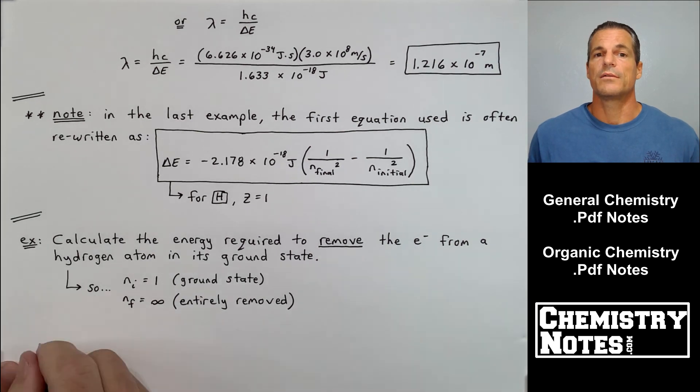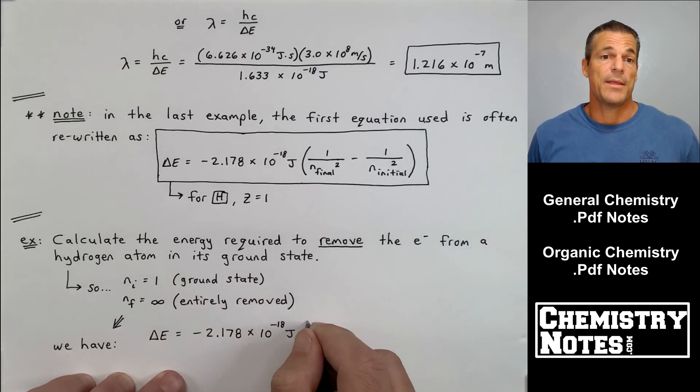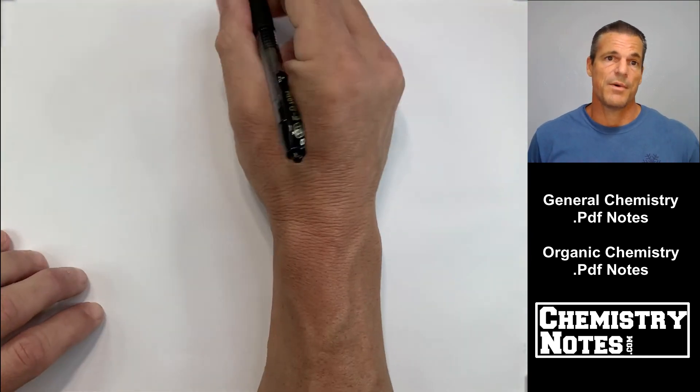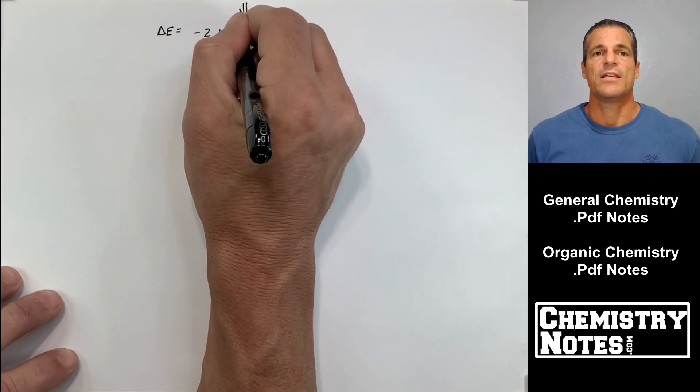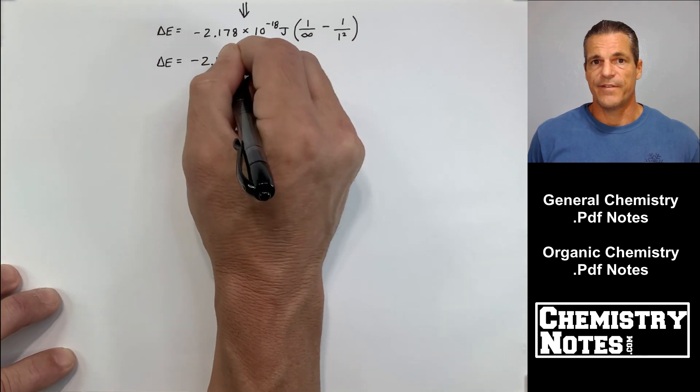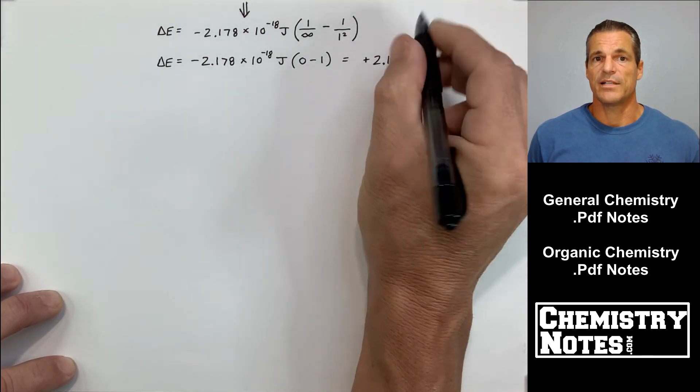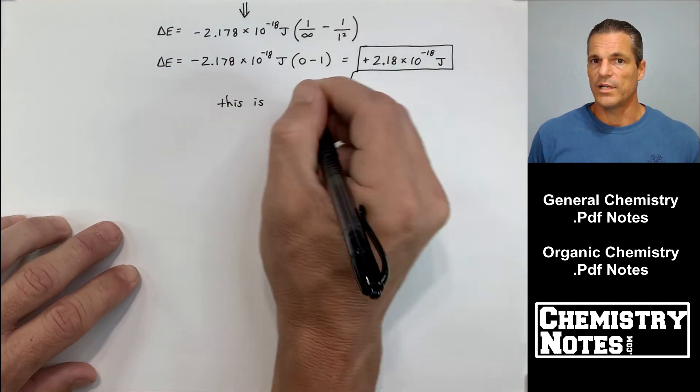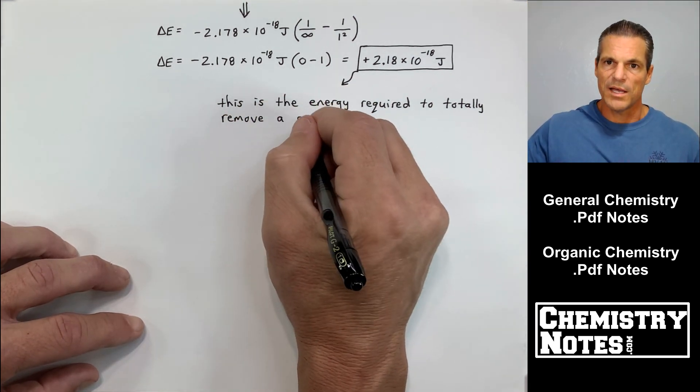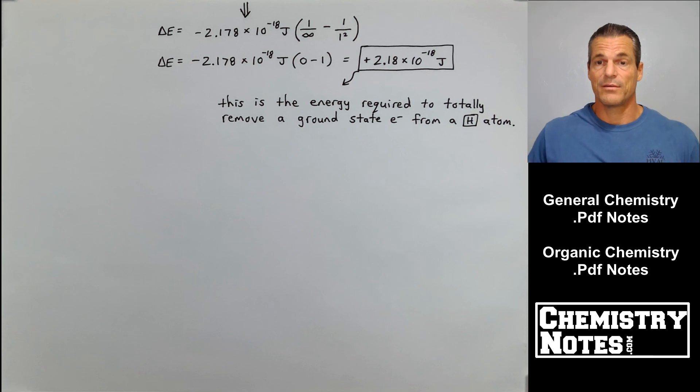Next example. Calculate the energy required to remove the electron from a hydrogen atom in its ground state. We want to pluck off the hydrogen electron. So n initial is 1, ground state. n final, we'll just call infinity for entirely removing it. We use that equation that we just had. Delta E equals minus 2.178 times 10 to the minus 18th joules times parentheses 1 over infinity minus 1 over 1 squared. So the answer is positive 2.18 times 10 to the minus 18th joules. This is the energy required to totally remove a ground state electron from a hydrogen atom. To ionize it.